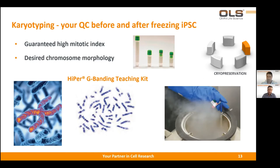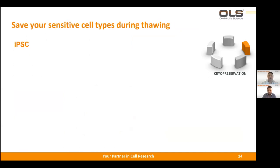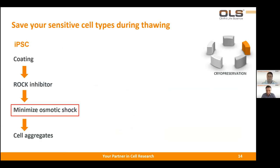You spoke about karyotyping and optimizing the freezing process — but what about thawing? Sometimes cell types are more difficult to thaw than others. For example, induced pluripotent stem cells are quite sensitive. iPSCs do not grow on plastic — you need a certain coating. Then you can add a ROCK inhibitor to increase cell survival, and it's important to minimize osmotic shock. It's also a good idea to keep the cells as cell aggregates, because iPSCs especially like contact with adjacent cells.